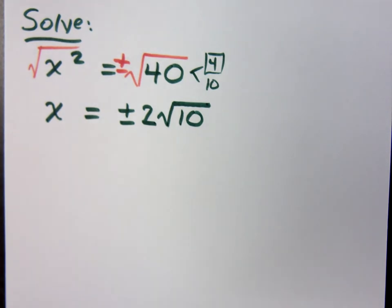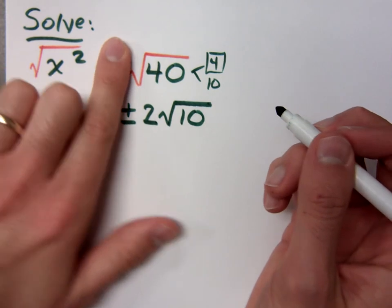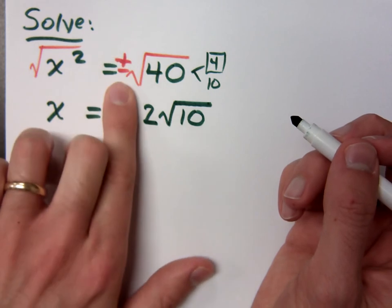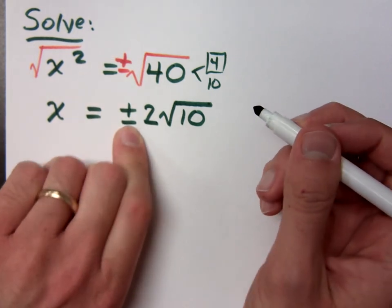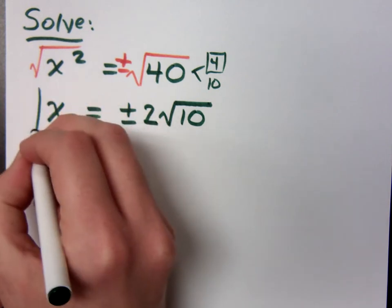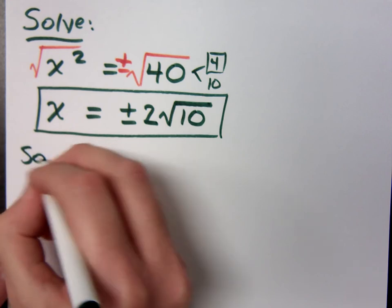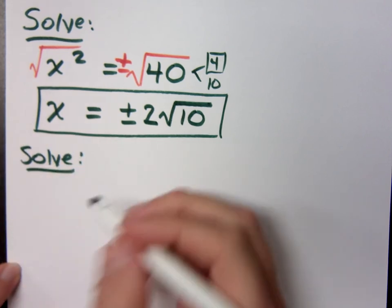Do not say 2 plus or minus the square root of 10. That's something different. If I didn't have the plus or minus, what's the square root of 40? Isn't it 2 square roots of 10? So, if the plus or minus is in front, that's why it goes in front there. Are you with me? Nice and easy. So cute. So sweet.